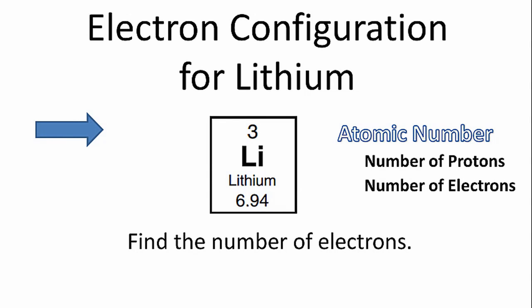To find the electron configuration for lithium, we first need to find the number of electrons. We can do that by looking at the atomic number, the number above the element symbol on the periodic table. That will tell us the number of protons, but it will also tell us the number of electrons.